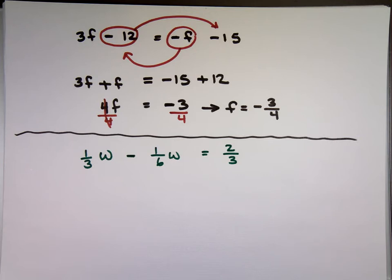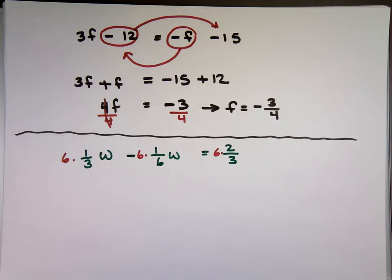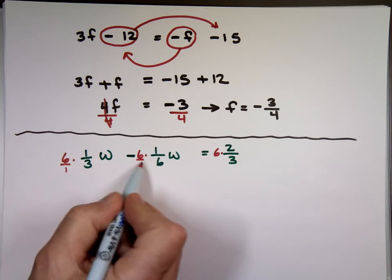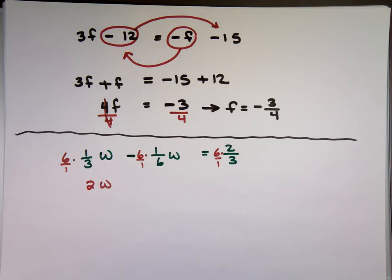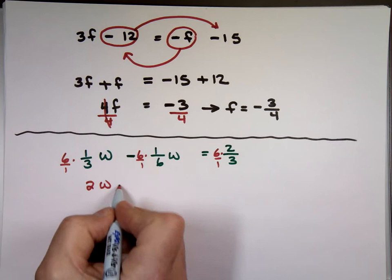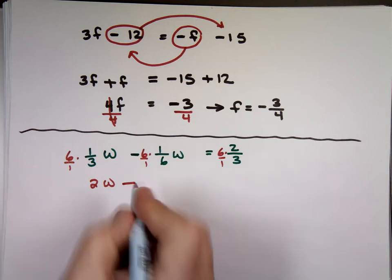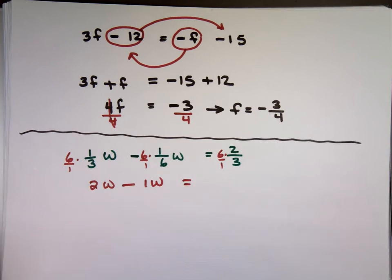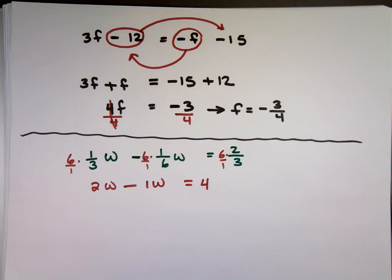What's the LCD for 3, 6 and 3? 6. Let's multiply every term by 6. Remember the 6 is 6 over what? 1. 6 times 1? 6. 6 divided by 3. What's 6 over 3? 2. This is 2W. Minus. 6 times 1? 6. 6 over 6. What's 6 over 6? 1. 1W. Equals 6 times 2? 12. 12 divided by 3? 4. There's no more fractions. So if you multiply by the LCD, all the fractions should disappear.